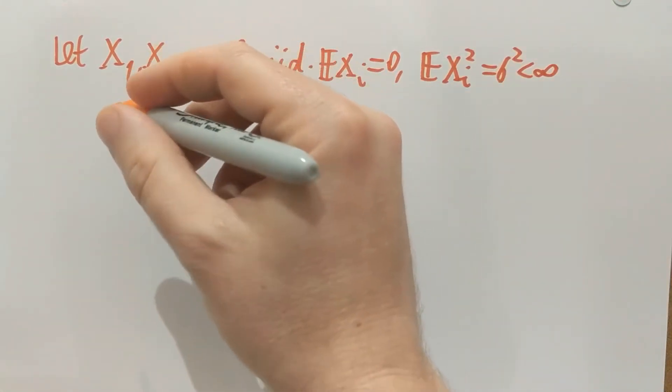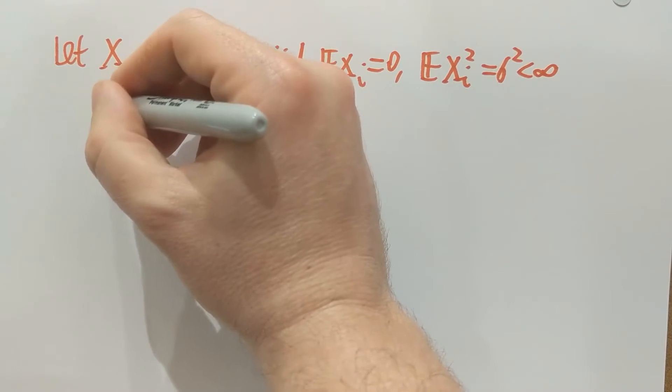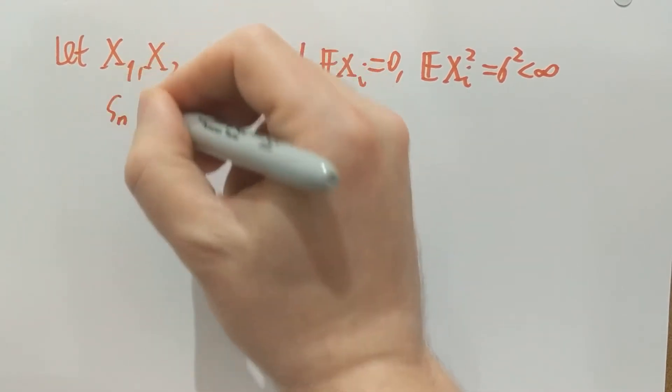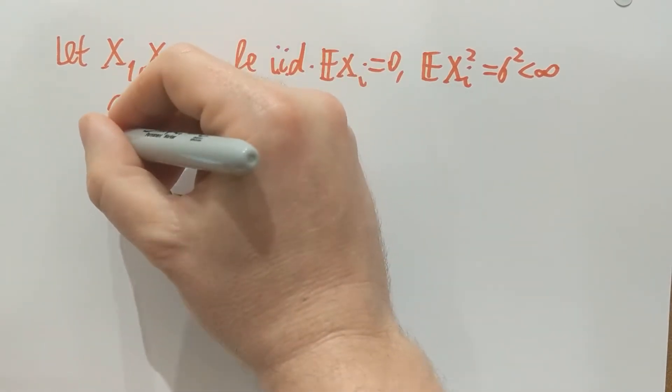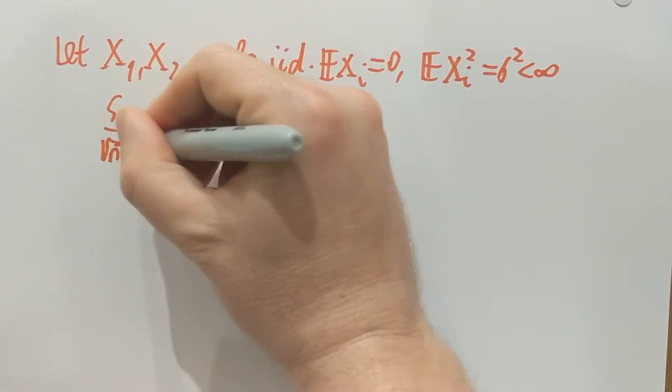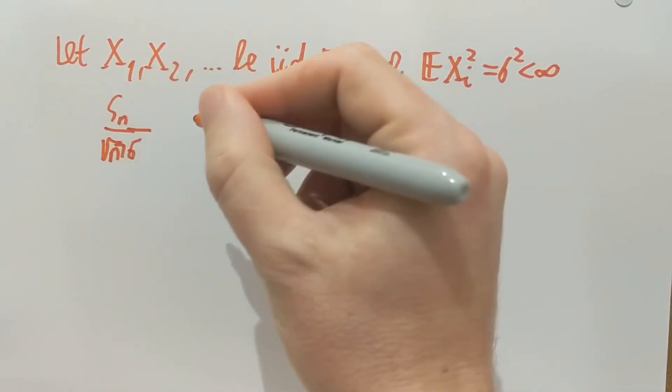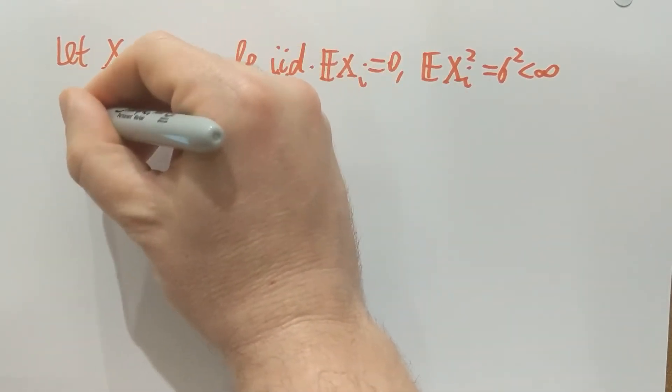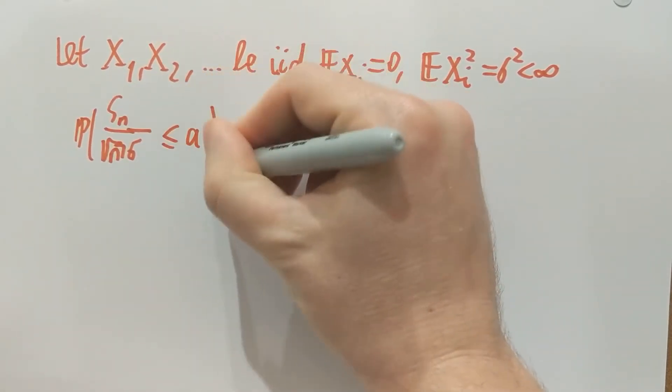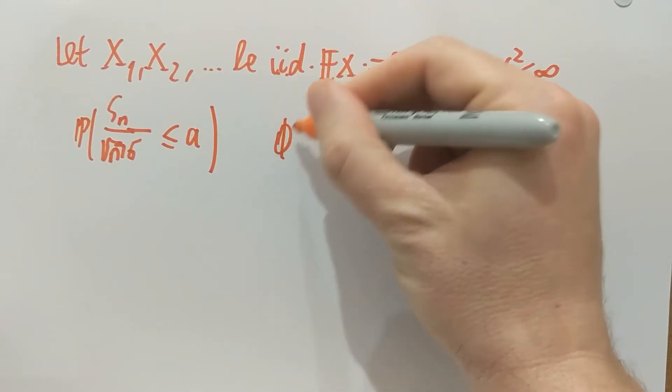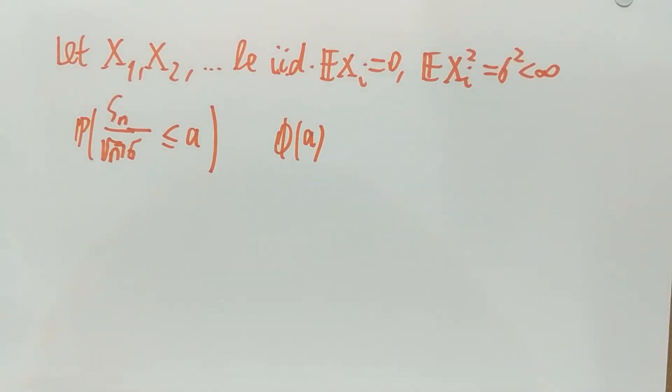And then the central limit theorem tells us, as you all know by now, about this combination: Sₙ minus the mean, but the mean is zero. Sₙ is, as before, the sum of the first n variables. The standard deviation of Sₙ, which is square root of n times sigma, the probability that this is smaller than or equal to a, should be close to phi of a. That's what the central limit theorem tells us. So that these are close to each other. In fact, the left-hand side converges to the right-hand side as n goes to infinity for every given a.